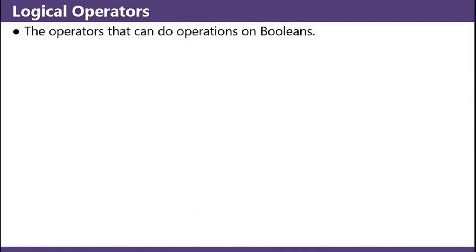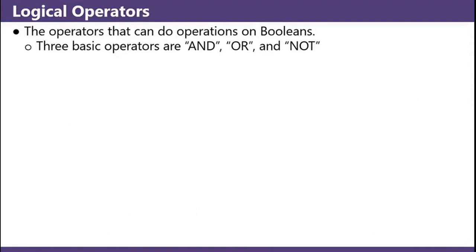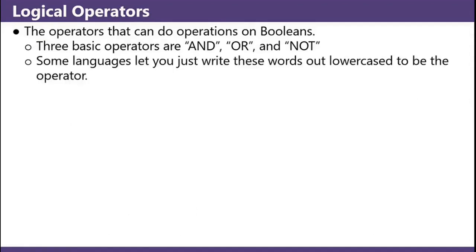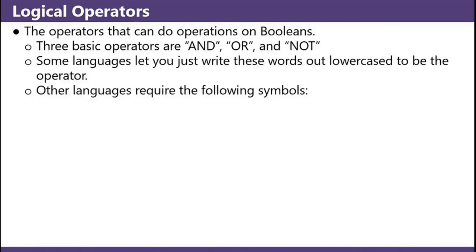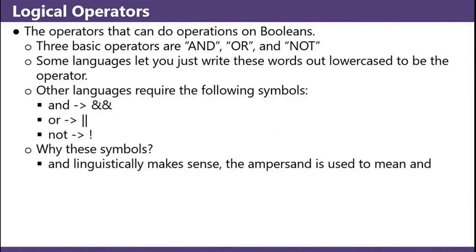Logical operators — the operators that can do operations on Booleans. Three basic operators are and, or, and not. Some languages just let you write these words out in lowercase to be the operator. Other languages require the following symbols: and is double ampersand, or is double vertical bar, and not is exclamation point.